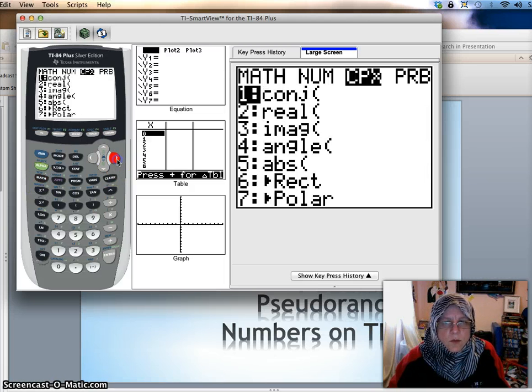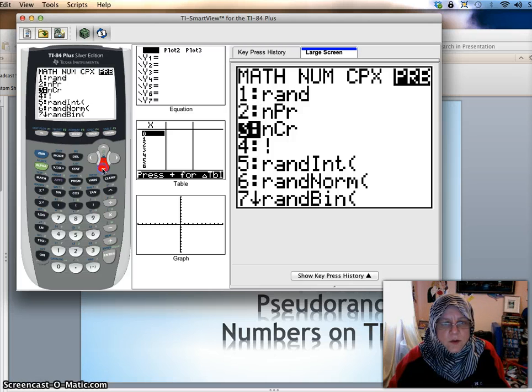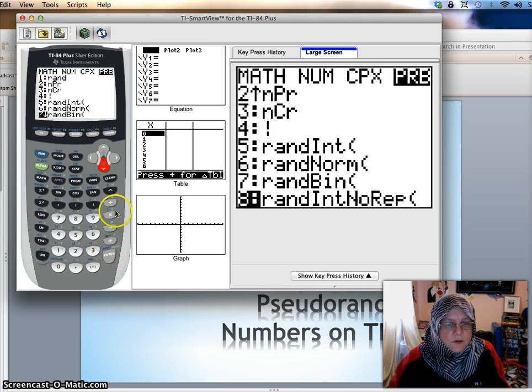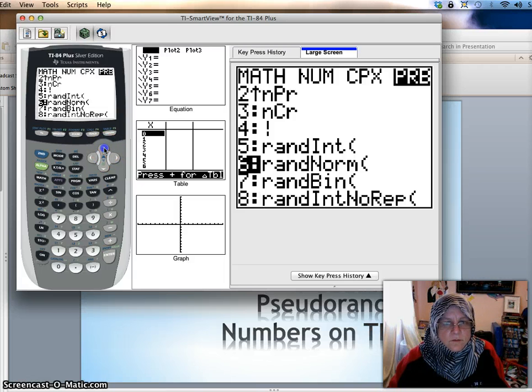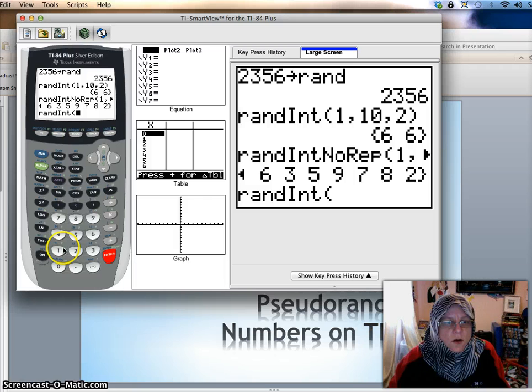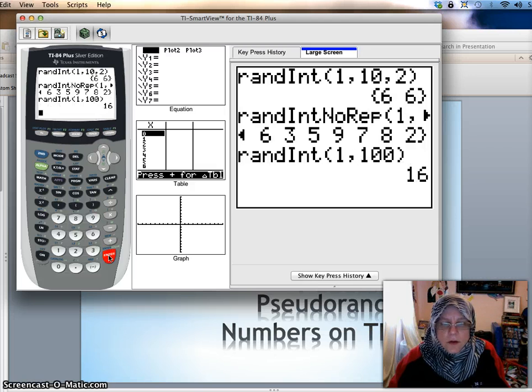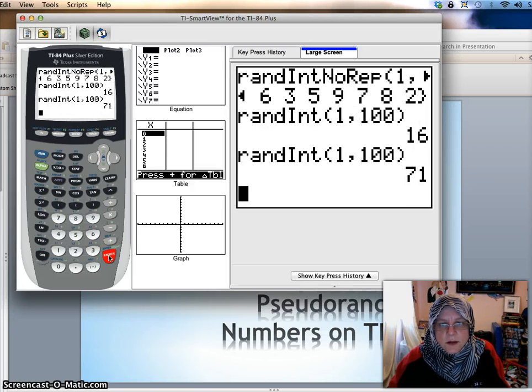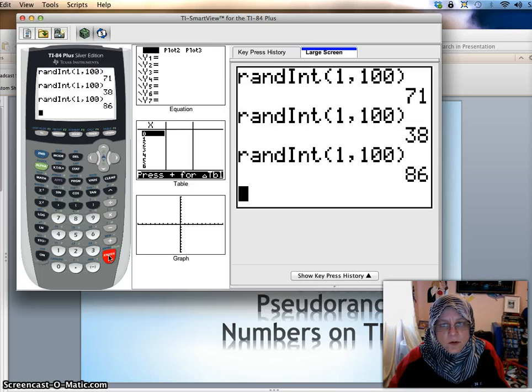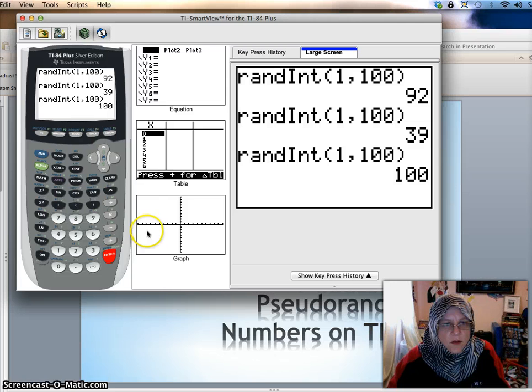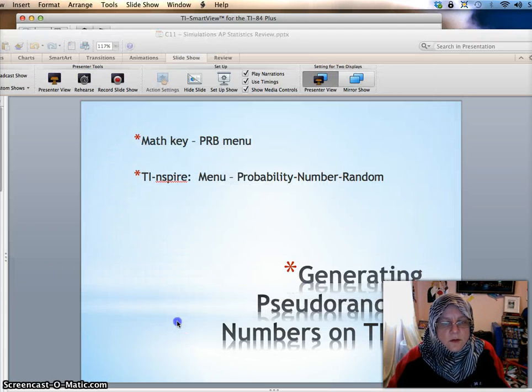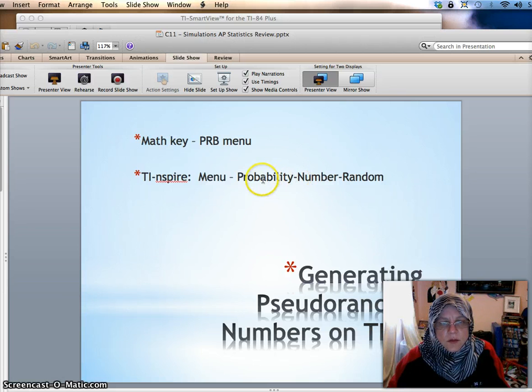Usually, the way we used it most frequently would just be to do randint. And let's say I'm trying to generate something that's mimicking percents. So then I might do 1 comma 100 and hit enter. And there's 16. You hit enter and it'll do again. Hit enter. It'll give you another one. And you can do that all day and get different random numbers between 1 and 100. Okay. So that is how we use our calculator to do that. On the inspire, you can find that under the probability menu under number. That's where most of the random things are located.